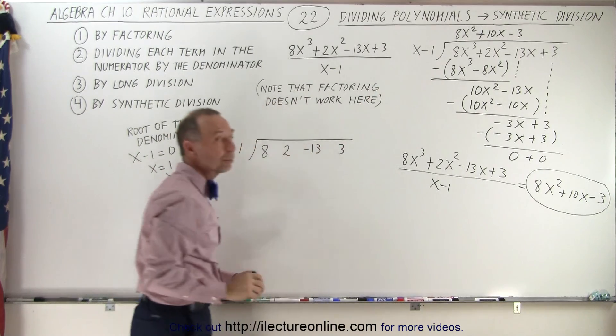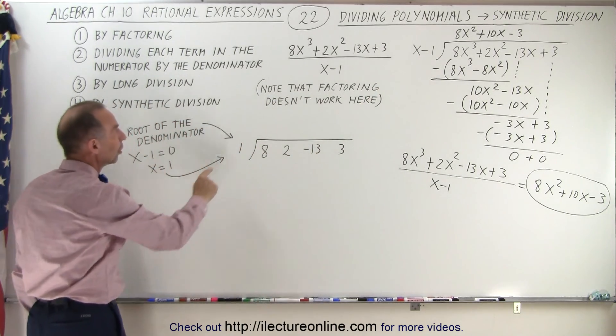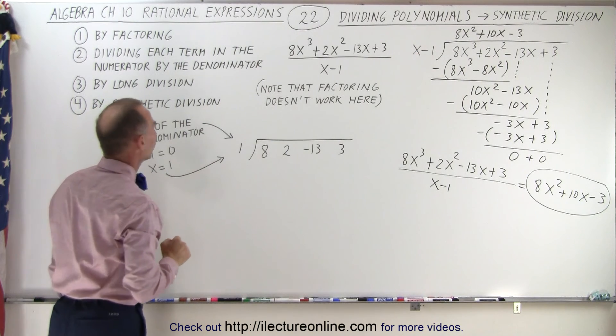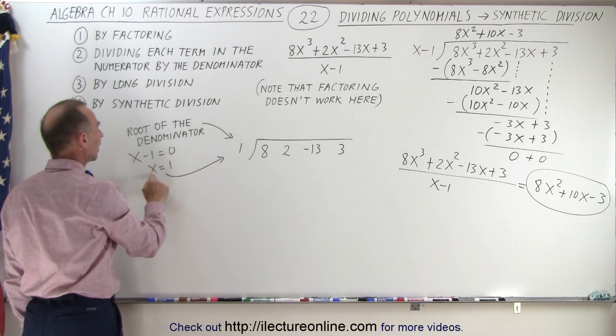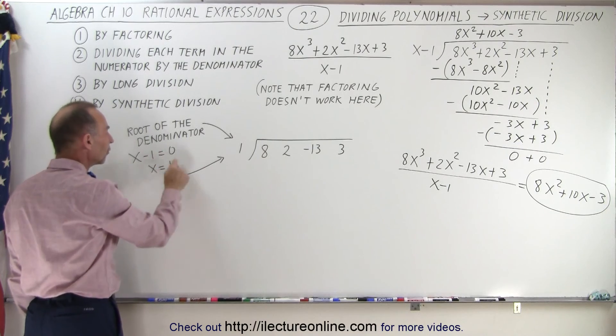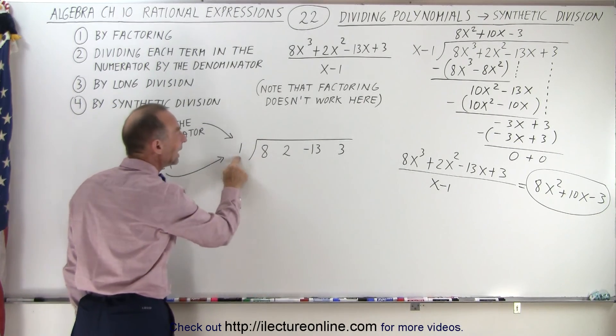instead of writing x minus 1, we're going to write the root of the denominator. So when we set x minus 1 equal to 0, which means x equals 1, this is the root of the denominator that goes in here.